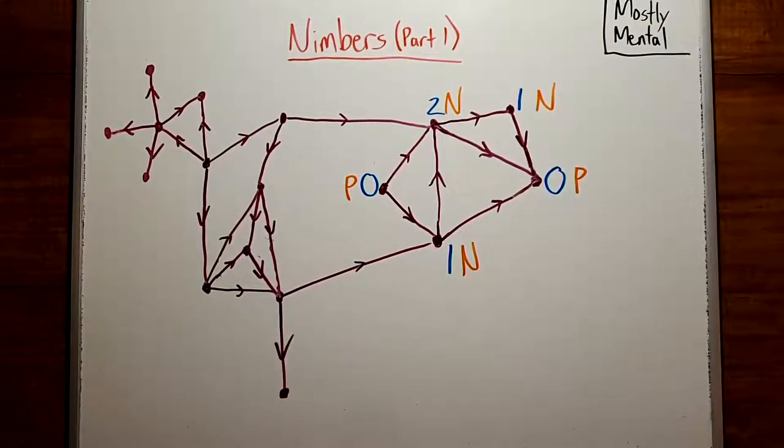And the rest are the N positions. But now we've got just a little bit more information than just P or N, and that makes all the difference when we start combining games.